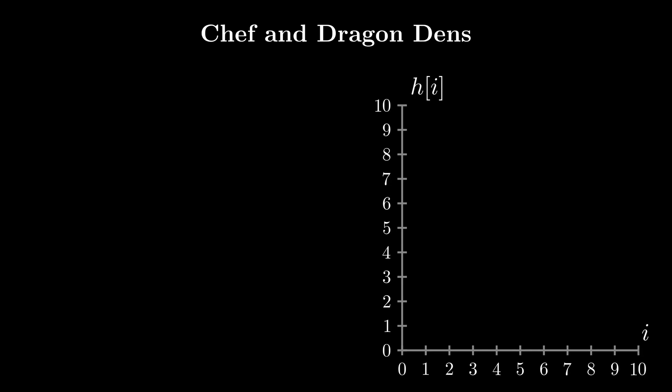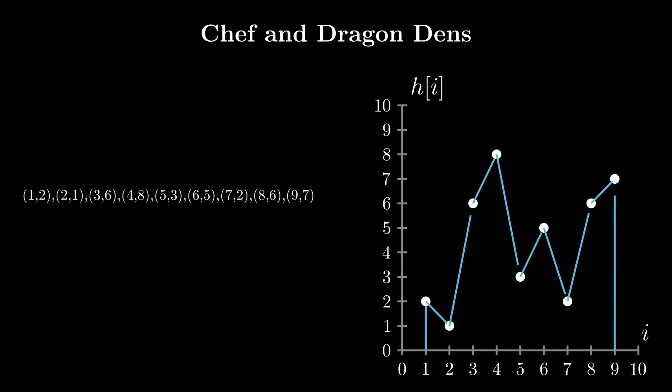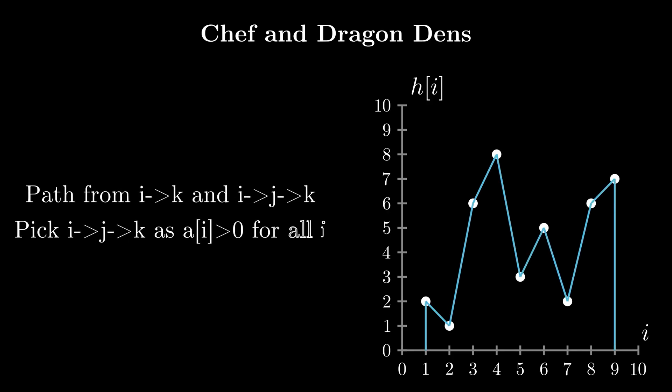Let's try and make some observations with a new set of points. If there exists some valid journey from I to K via J and another path from I to K without going to J, it's always better to visit J during our journey as all values of A are greater than 0, so visiting an extra valid city will never result in an answer that's worse off. From this, we can conclude that removing a point from a valid journey will never result in a better answer.